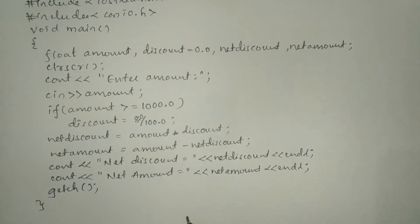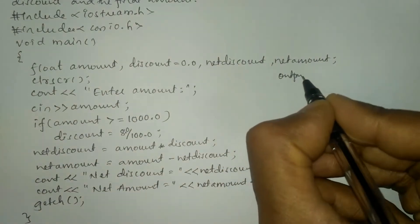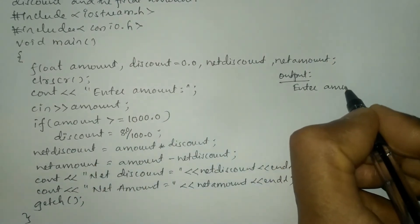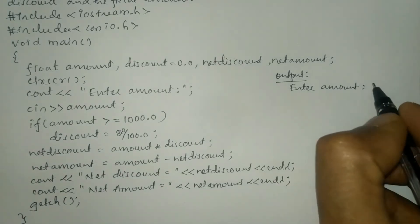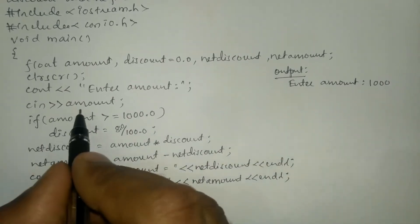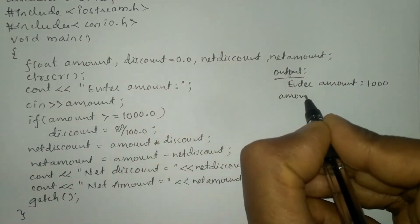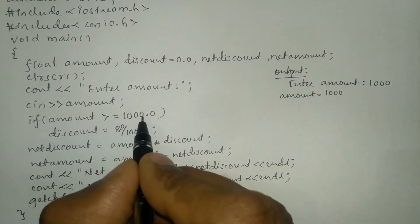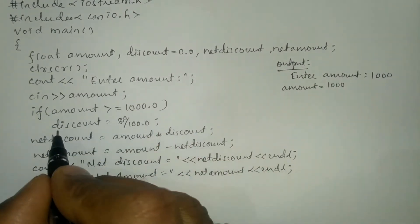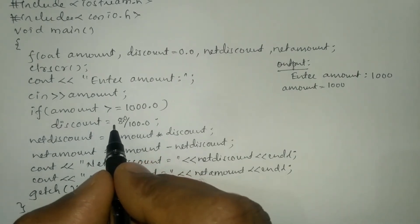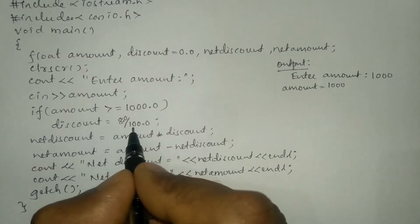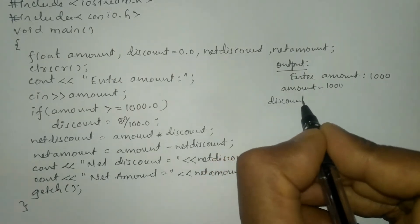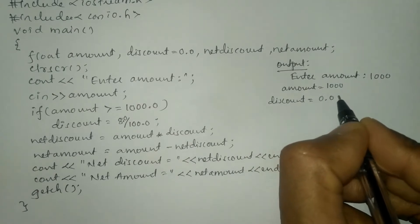Once we compile and run this program it will ask the user to enter amount. For example, I'm going to enter 1000. The variable amount is now holding 1000, which is greater than or equal to 1000.0 — that is true. Once it is true, the discount will be calculated. Discount equals 8 divided by 100, which gives 0.08, so discount is equal to 0.08.